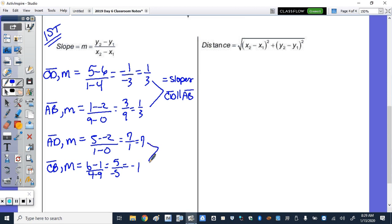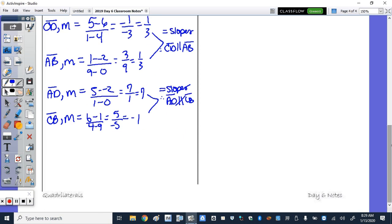Now for my conclusion. Since only one pair of opposite sides are parallel, quadrilateral ABCD is a trapezoid.